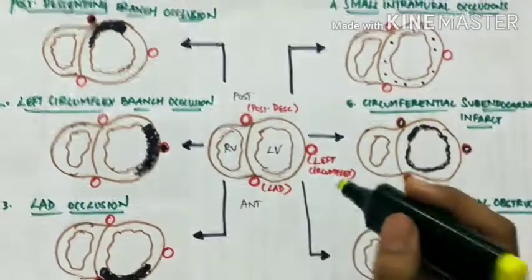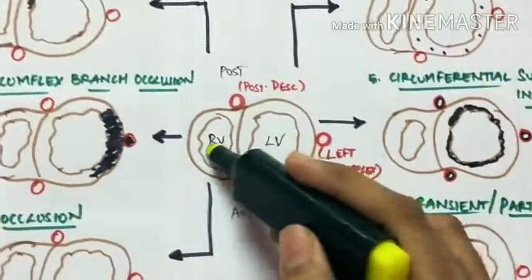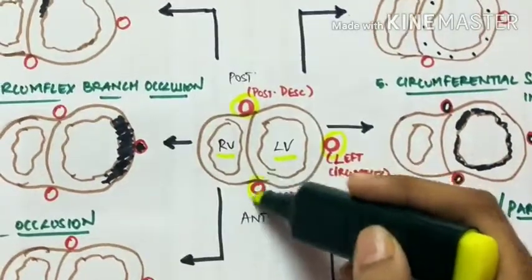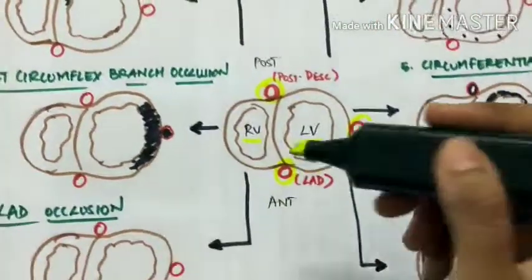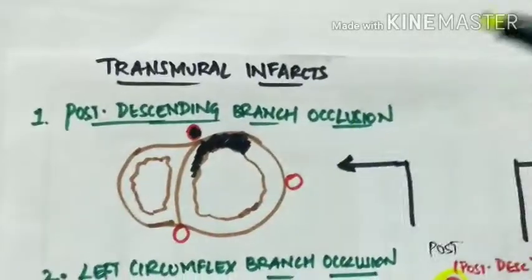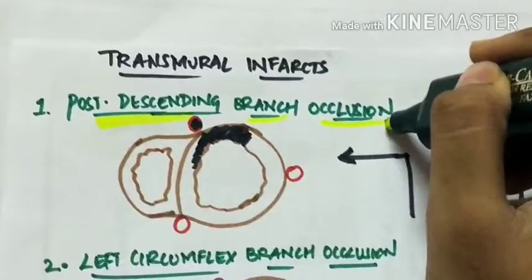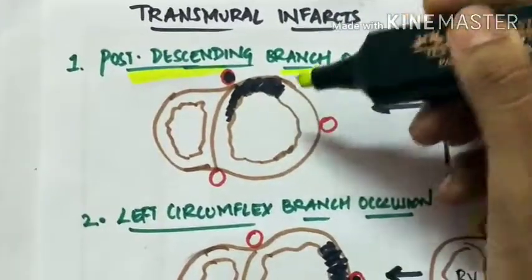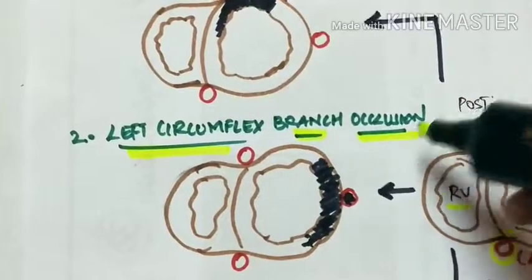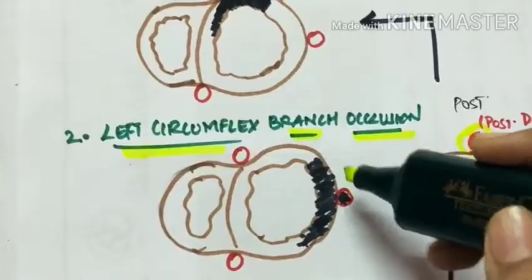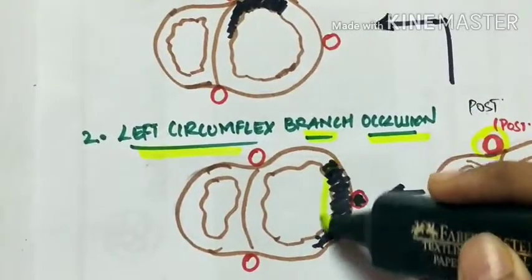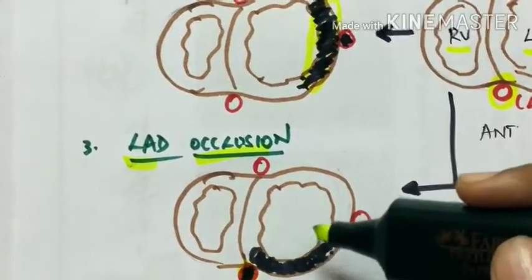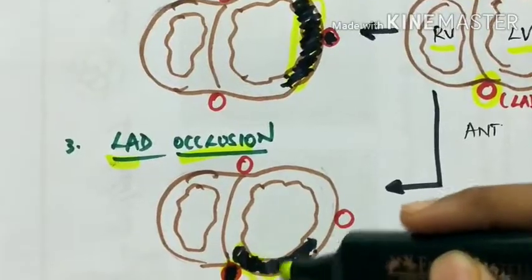Different types of infarcts illustrated on a normal heart showing the right ventricle, left ventricle, posterior descending branch, left circumflex branch, and left anterior descending branches. Three transmural infarcts: posterior descending branch occlusion causes infarction of the posterior surface; left circumflex branch occlusion causes transmural infarct of the left surface; LAD occlusion — the most common — causes transmural infarct of the left anterior surface.